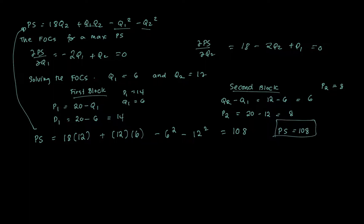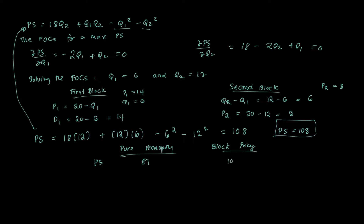Comparing pure monopoly and block pricing: under pure monopoly, producer surplus is 81, while under block pricing it's 108 — far higher. Profit per consumer increased by $27. Also, the quantity sold is effectively higher: 9 units under pure monopoly versus 12 under block pricing.